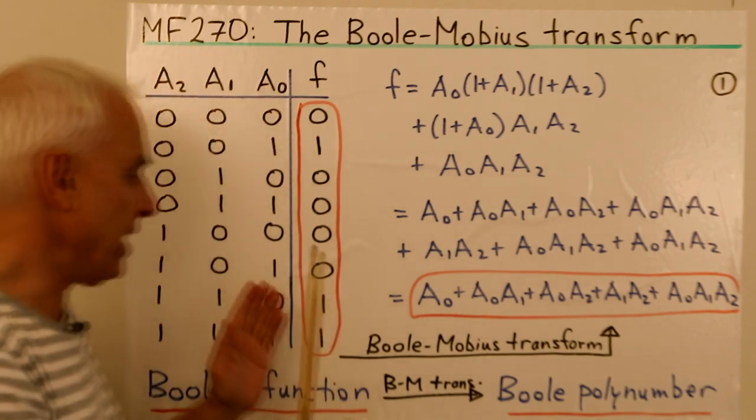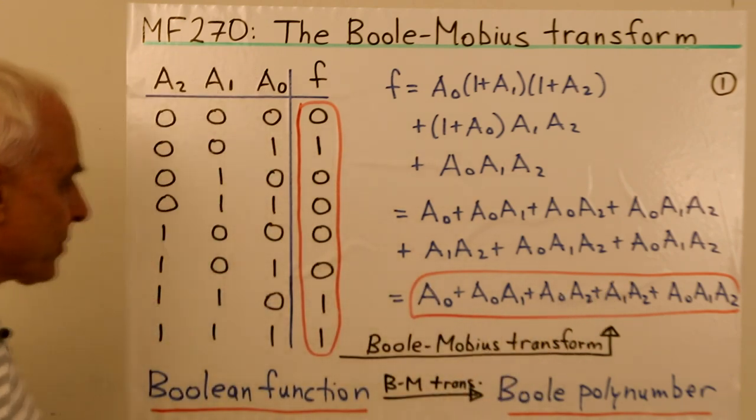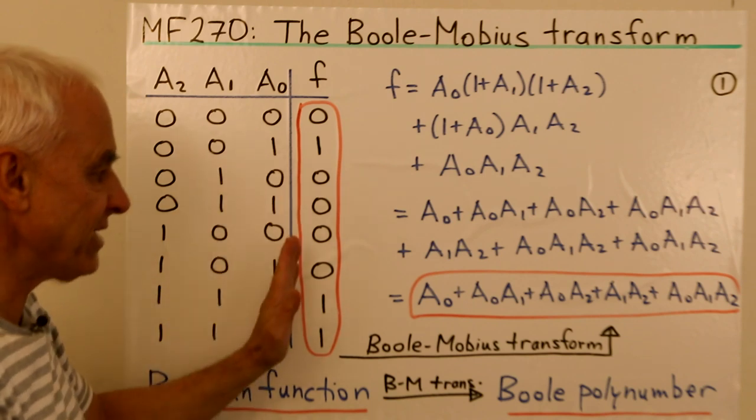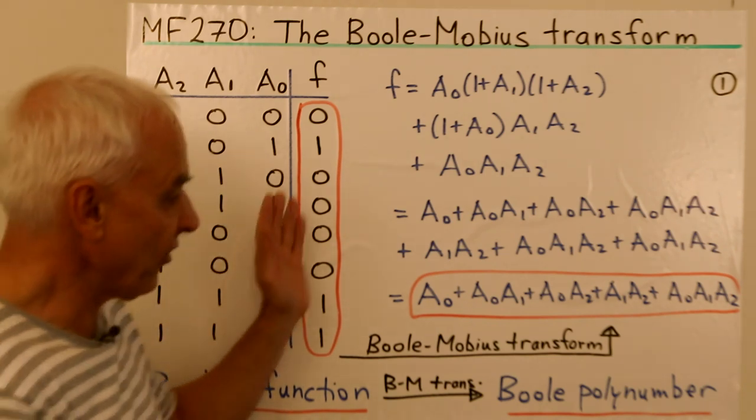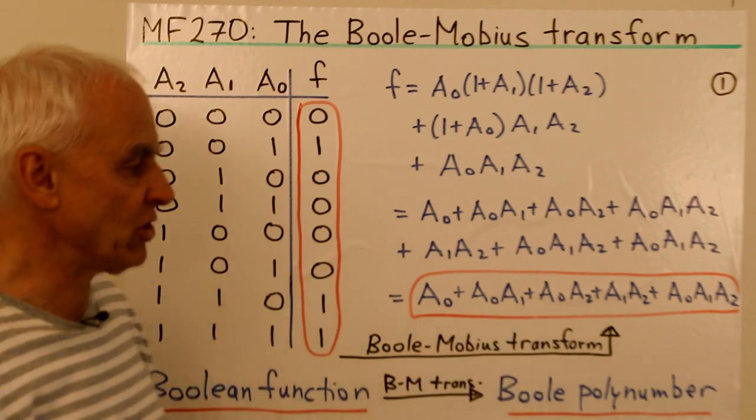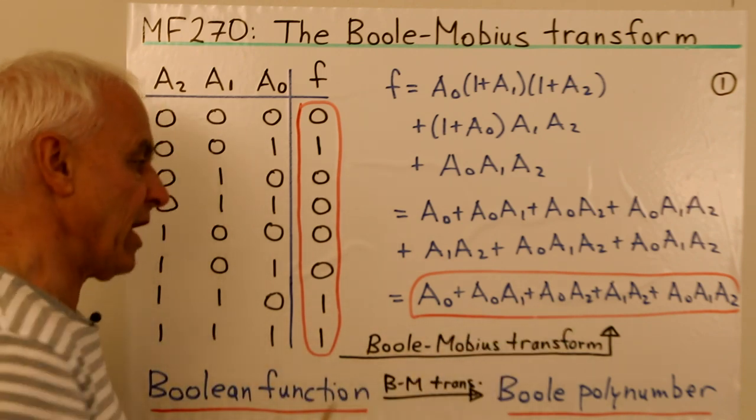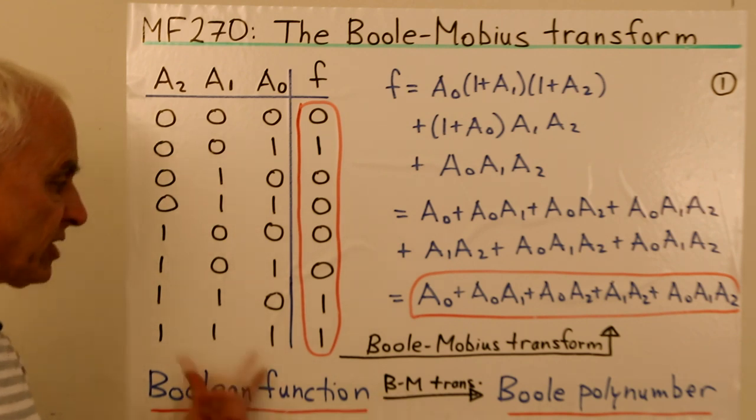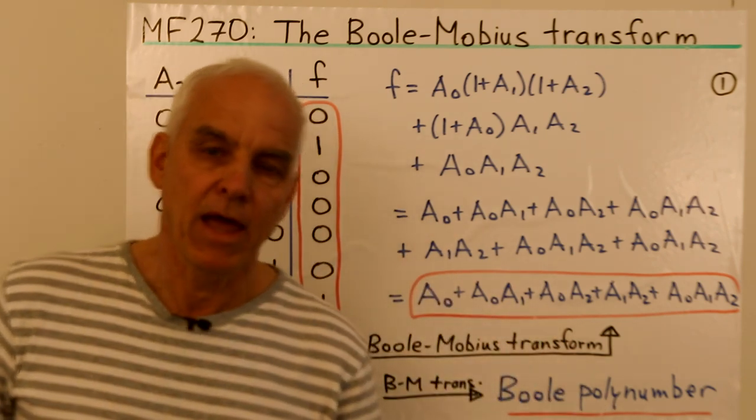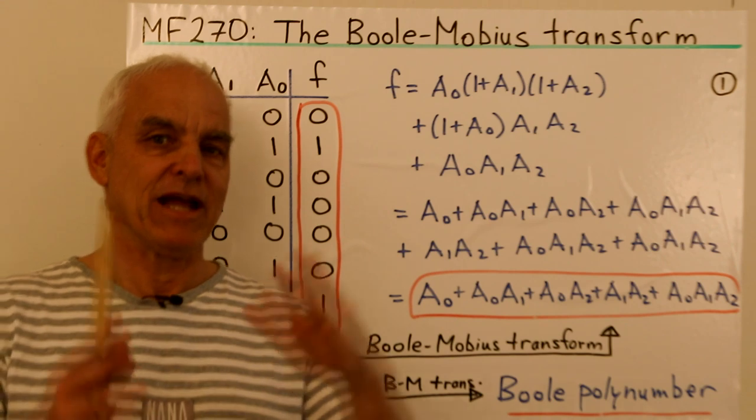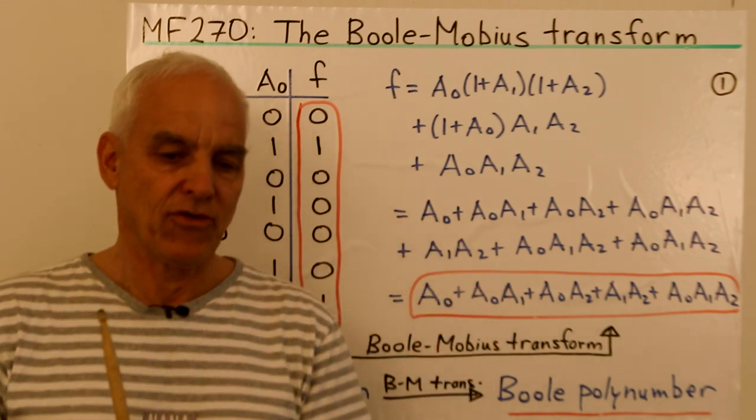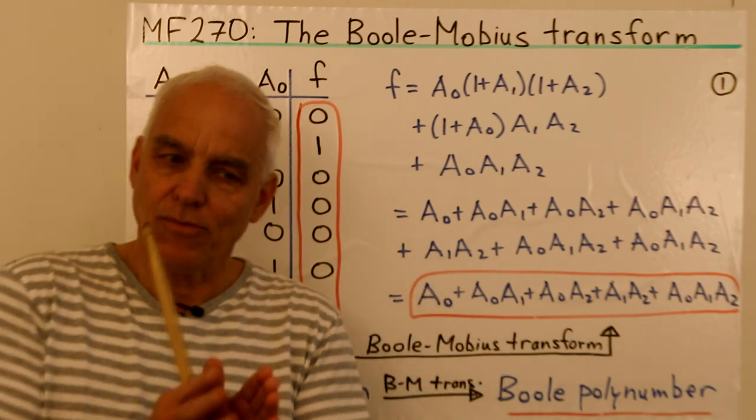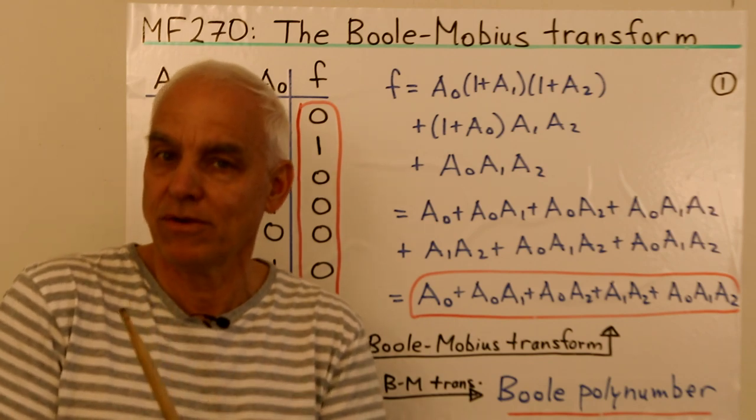So we've gone from the Boolean function to the Boole polynumber. And we're going to think now about this as being a transformation. It's something that takes something in this space—it's really kind of an eight-dimensional space—and gives us something in this space, which is also an eight-dimensional space. We're going to call this the Boole-Mobius transform.